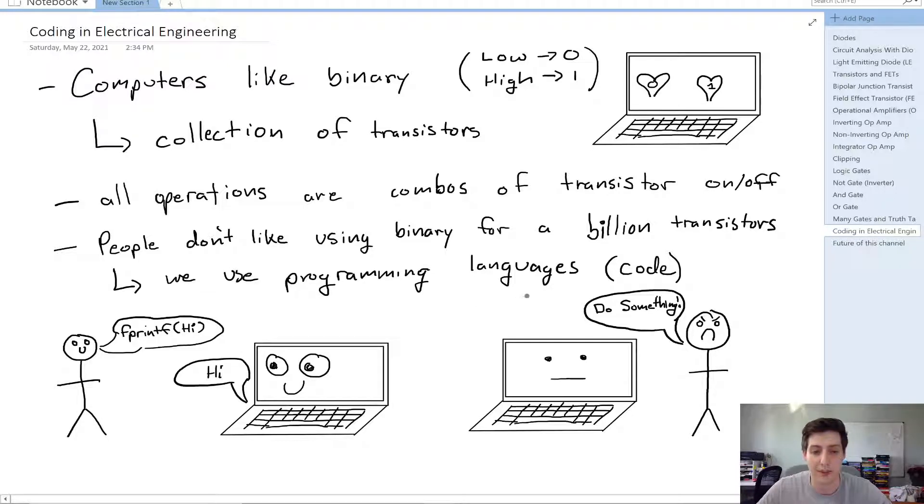Now this code that we type after a few stages gets converted into binary, and that can be applied to all of the transistors to do all of these operations. So if we write in some kind of code that the computer recognizes, we can have it do some function or some task that we want it to. But if we have complete ignorance and we just want to tell the computer to do something, it doesn't want to do it unless it understands the code that it can convert into that binary.